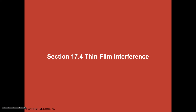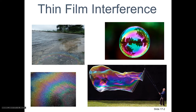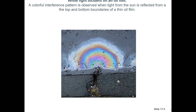Thin film interference. Did you ever see with bubbles, you see the different colors on the surface of the bubble? Or if there's some gasoline or oil on your driveway or on the roadway, you're going to see these different colors. This is what we call thin film interference. White light incident on an oil film produces a colorful interference pattern observed when light from the sun is reflected from the top and bottom boundaries of a thin oil film.